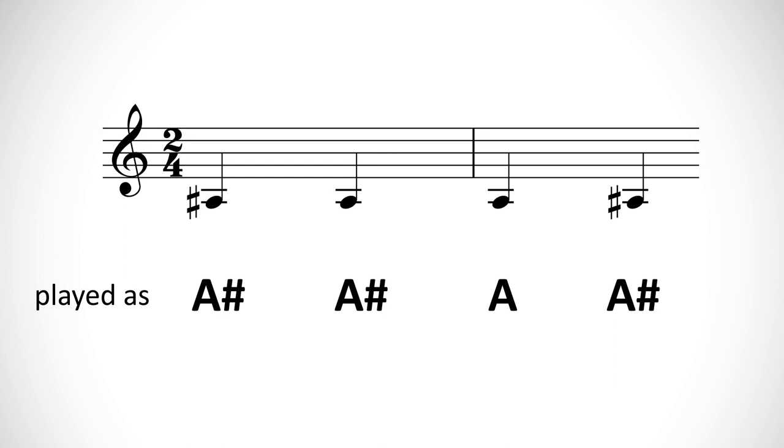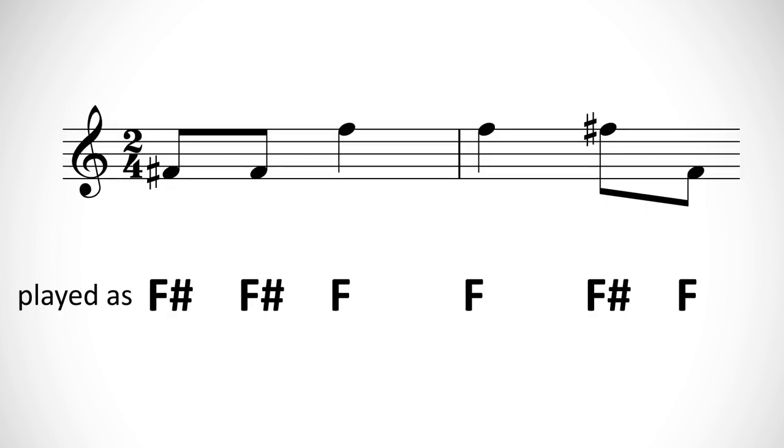Once we get to the end of the measure, the bar line, we get a clean slate and don't assume that A is still sharp unless we see another sharp in front of the A. So when using accidentals, you have to keep using them again in every new measure. In most cases, you also won't assume that an accidental applied to a note will also apply for any appearances of that note in different octaves.